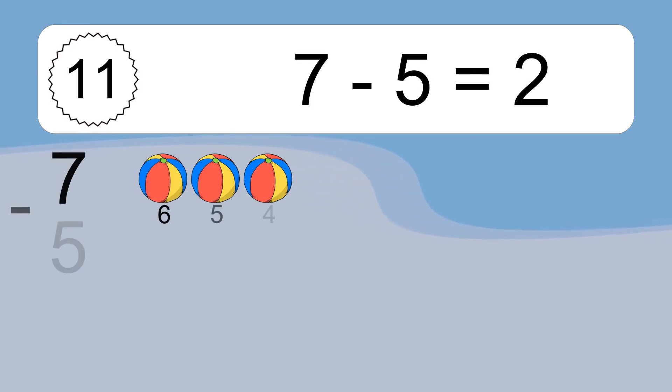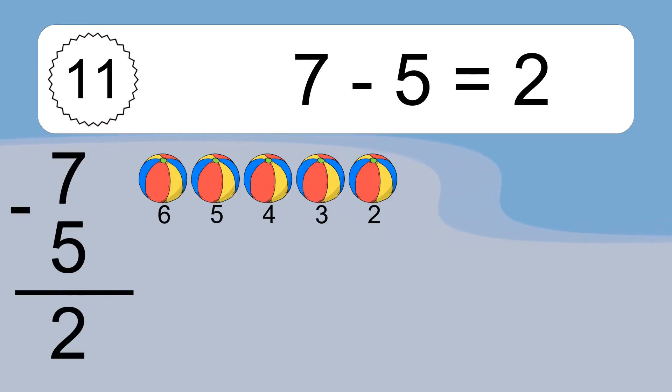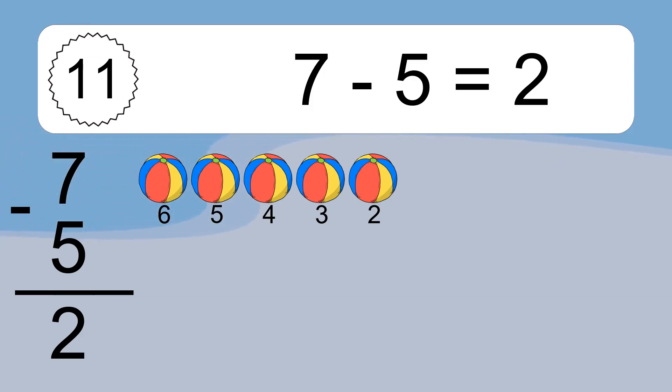7 minus 5 equals what? 7 minus 5 equals 2. Let's count it: 6, 5, 4, 3, 2.